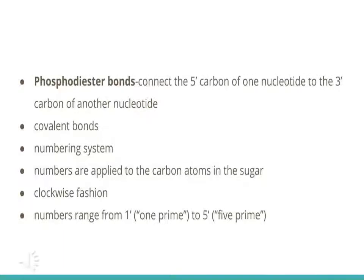Phosphodiester bonds in DNA polymers connect the 5-carbon of one nucleotide to the 3-carbon of another nucleotide. The nucleotide monomers in a DNA polymer are connected by strong electromagnetic attractions called phosphodiester bonds, which are part of a larger class of electromagnetic attractions called covalent bonds. Biochemists have developed a numbering system for the carbon atoms in the sugar, starting at the carbon immediately to the right of the oxygen in the deoxyribose ring and continuing clockwise. The numbers range from 1' (the carbon immediately to the right of the oxygen) all the way to 5' (the carbon that sticks off the fourth carbon in the deoxyribose ring).